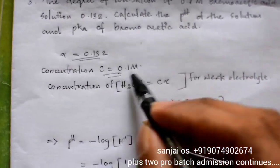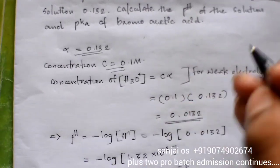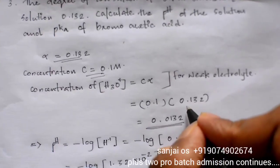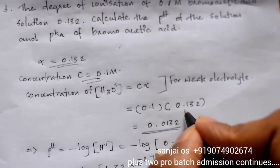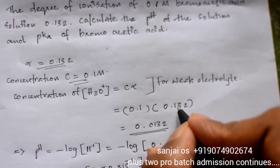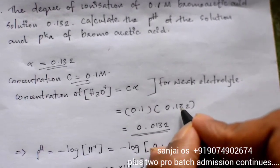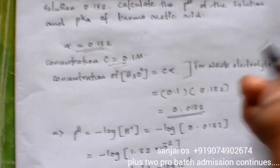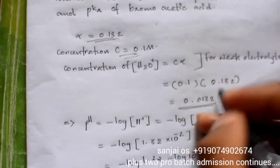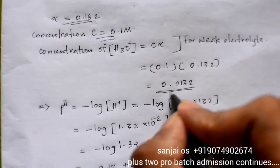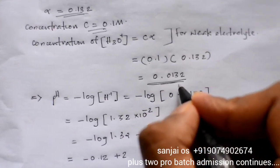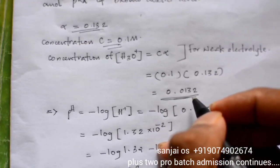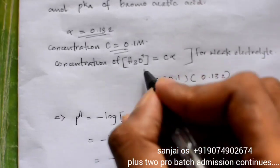Concentration of H₃O plus equals C alpha equals 0.1 into 0.132 equals 0.0132.